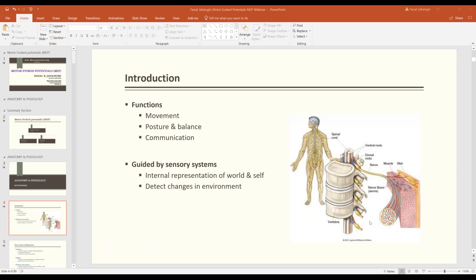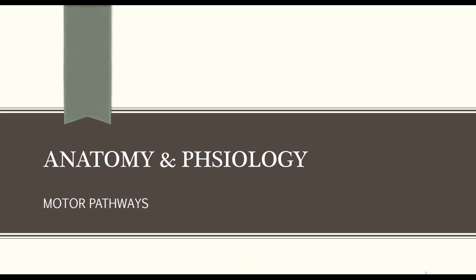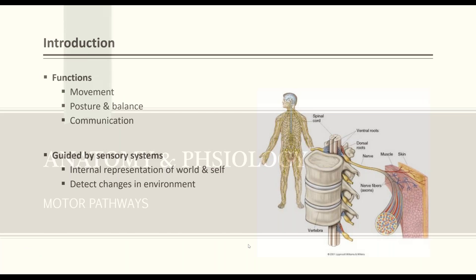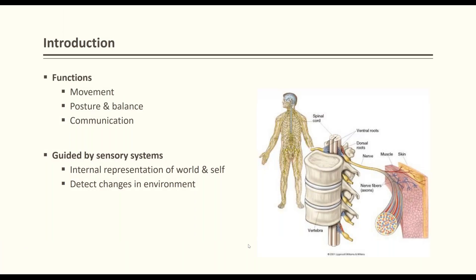I'm going to talk about basic anatomy first. The function of the motor evoked potential — there are two basic functions on the motor pathway: gross movement, posture and balance, and communication and speech. These come into the motor pathway, and they are guided by sensory inputs — the internal representation of the world. The person detects changes in the environment through different sensory input and produces motor function.